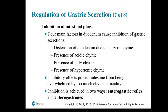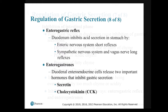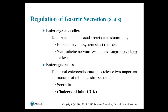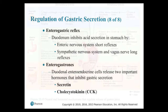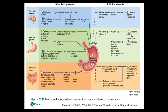There is first a brief stimulatory component followed by inhibition. Stimulation: partially digested food entering the small intestine causes brief release of intestinal gastrin, encouraging gastric glands to continue secretory activities. Inhibition of the intestinal phase includes distention of the duodenum, presence of acidic chyme, fatty chyme, and hypertonic chyme. These inhibitory effects protect the intestine from too much chyme or acidity and are achieved through the enterogastric reflex (via enteric nervous system short reflexes and sympathetic/vagus nerve long reflexes) and enterogastrones — secretin and cholecystokinin (CCK) — released by duodenal enteroendocrine cells.